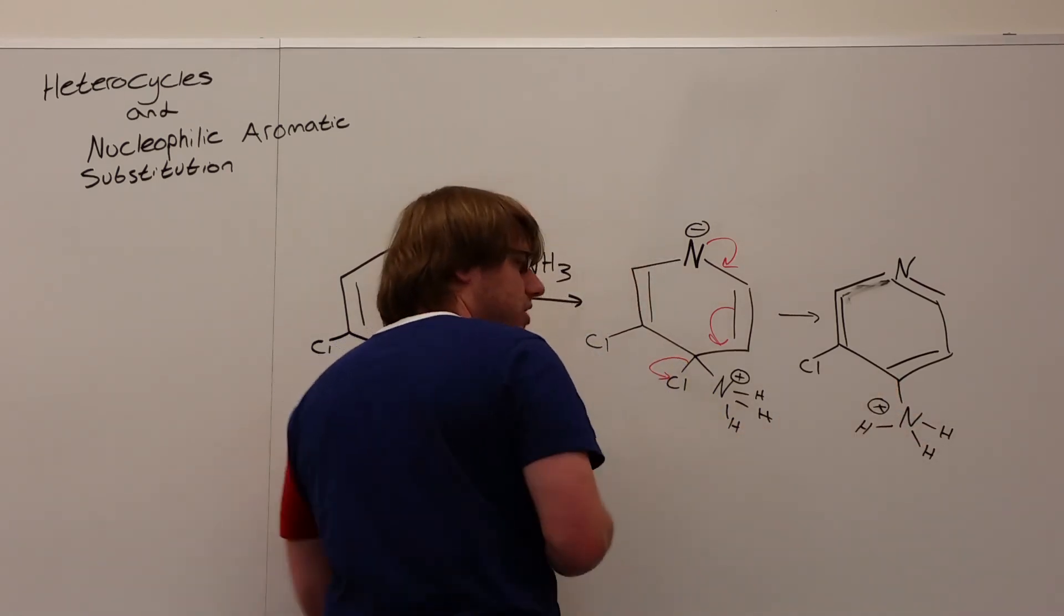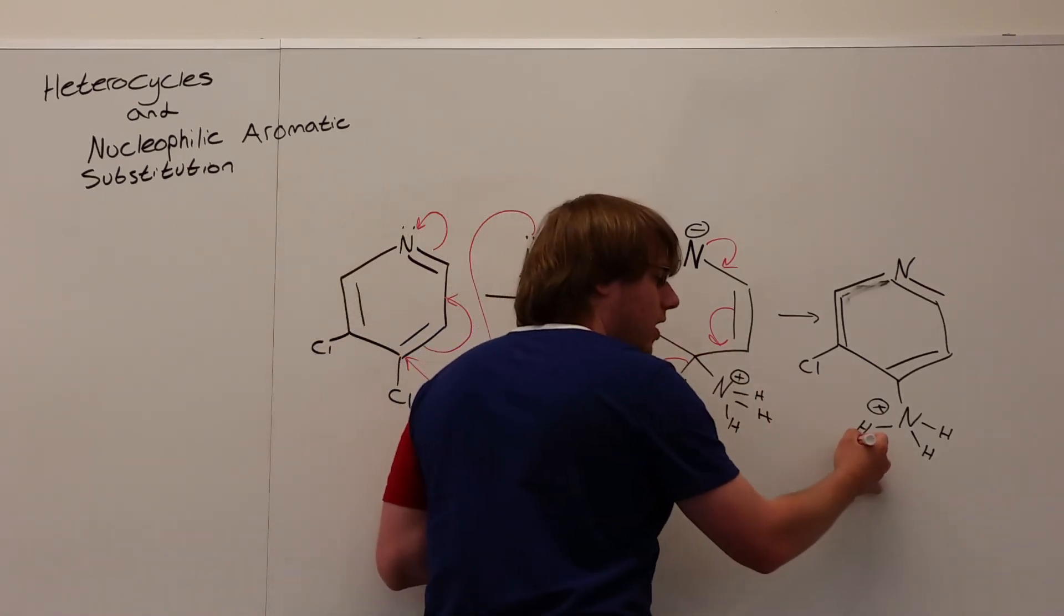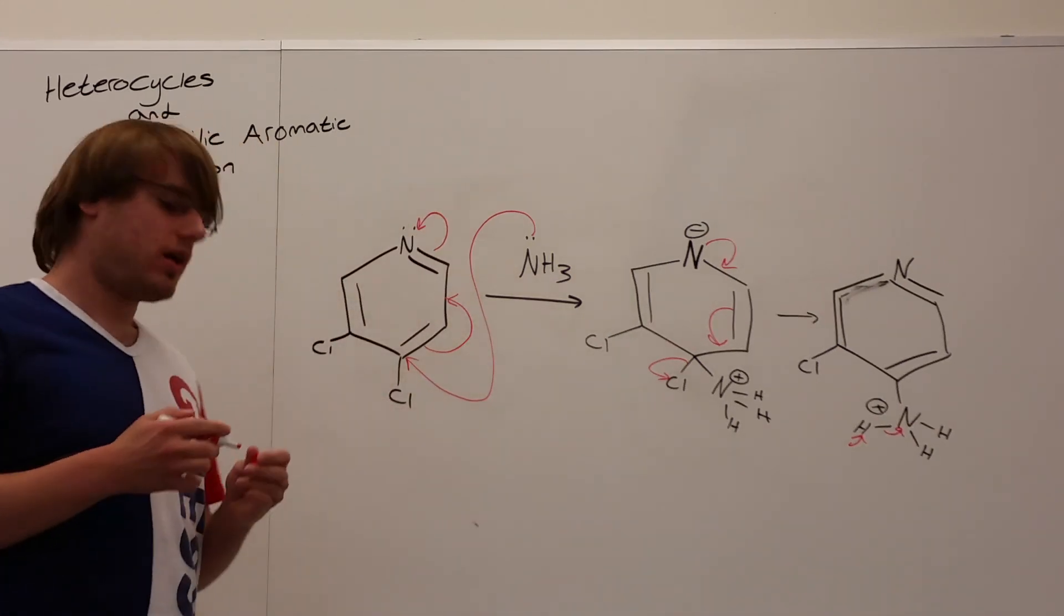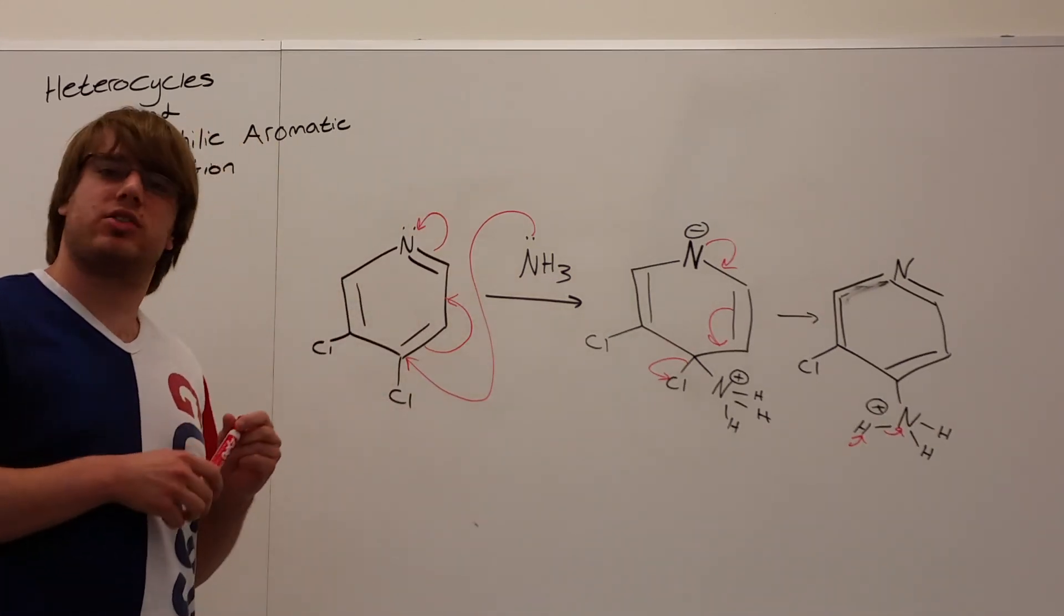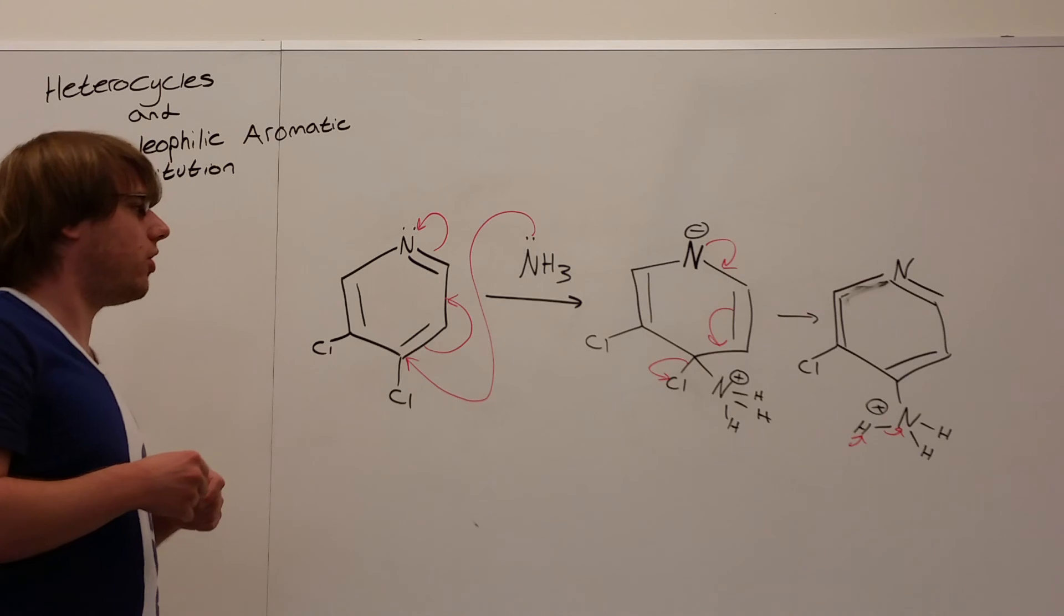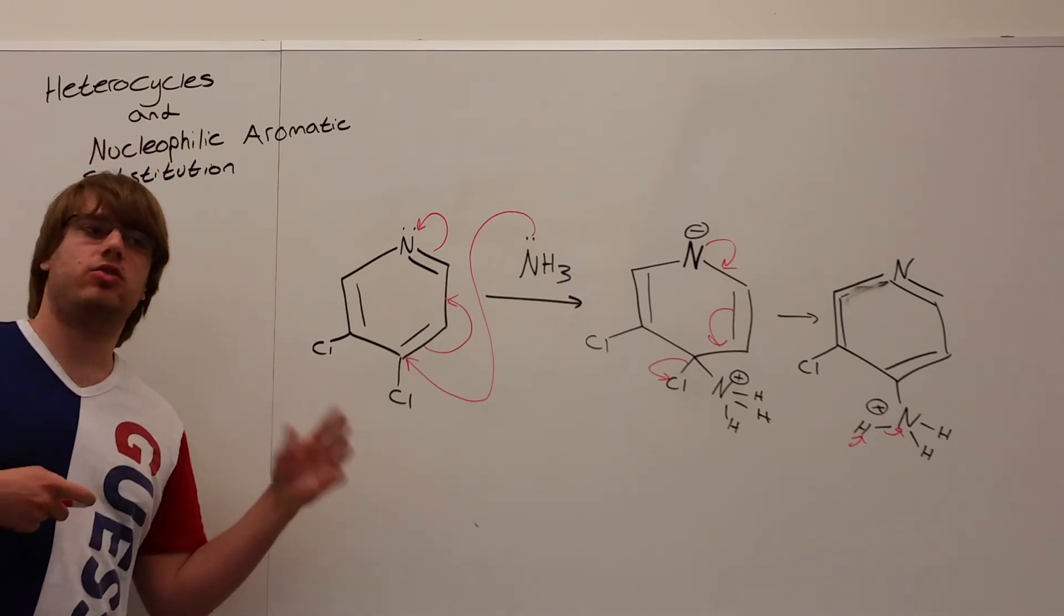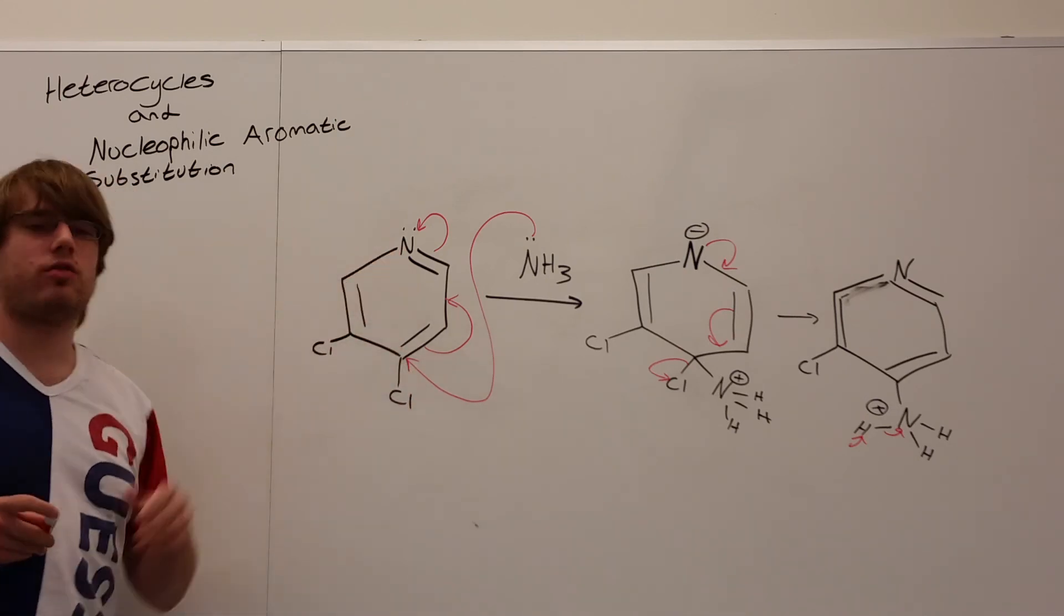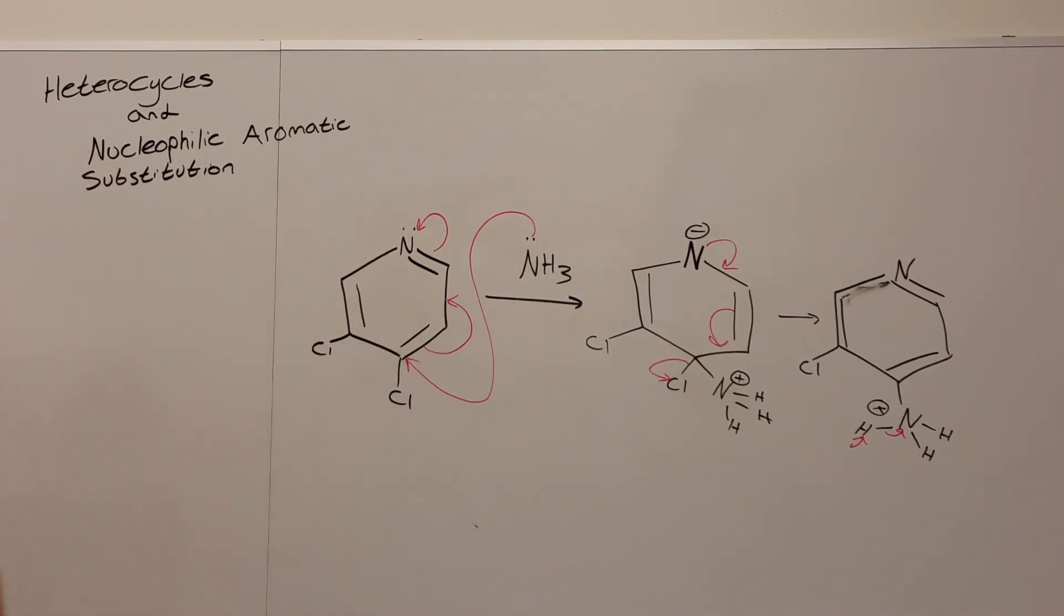And so the last step is simply to deprotonate it. So some base, possibly another one of these NH3s, comes in, grabs that hydrogen, the electrons swing down to the nitrogen, and you'll get your final product. And beyond that, there's not much I think they can ask you about how these reactions work. So if you've got the basic mechanism down, and you know what to expect, and you know your rule about you can only replace ortho or para groups to the nitrogen in the ring, you should be fine for this kind of question.